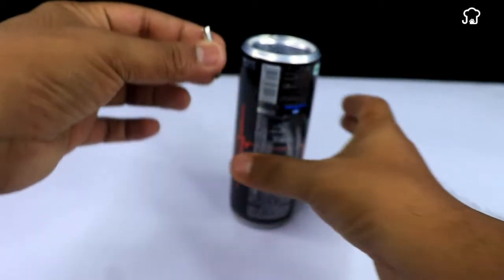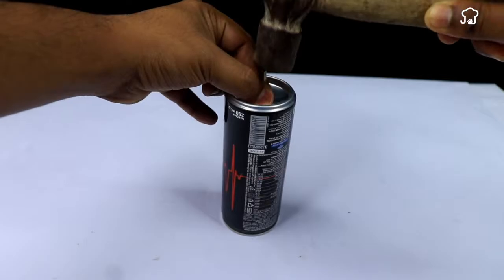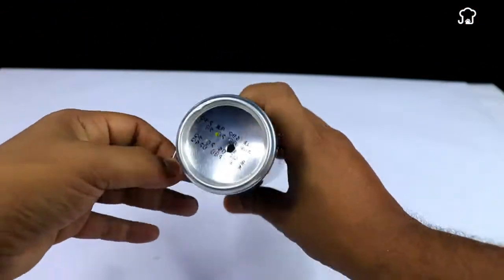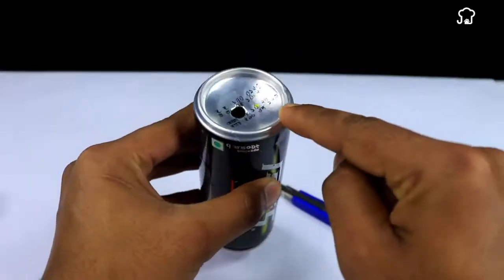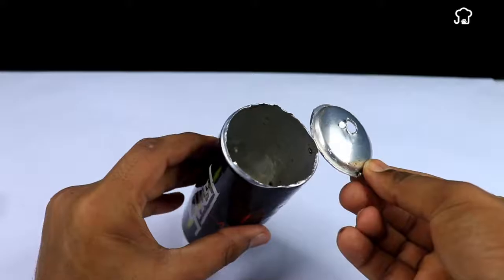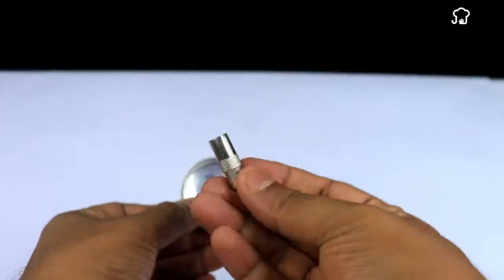First you'll need an aluminum can. With the help of a punching object, make a hole in the top of the can. Then with a cutter, cut the edge of the top of the can as shown in the instructions. Now, take an adapter or dual-output coaxial video connector and place it in the hole in the top.